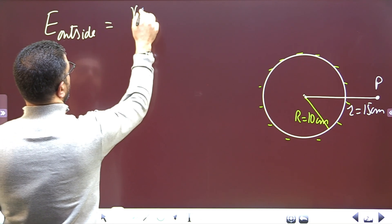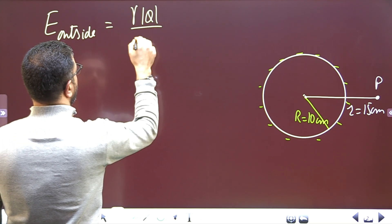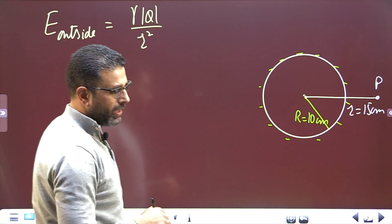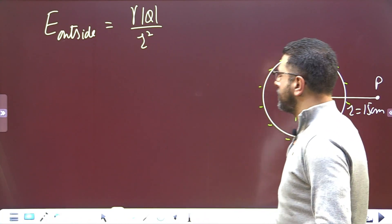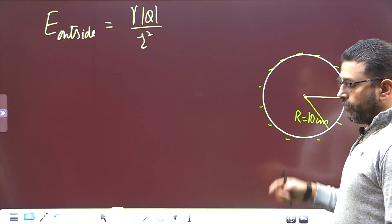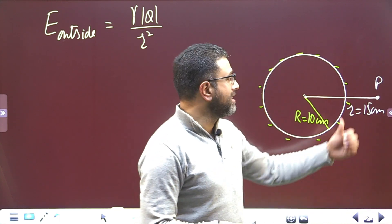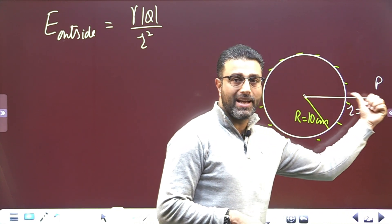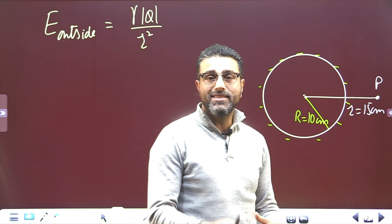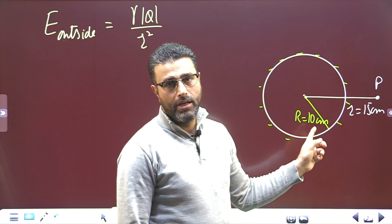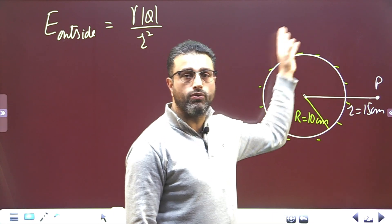The field outside is given by: E = k|Q|/R², same as that of a point charge. Now the question also tells us that this field is radially inward.